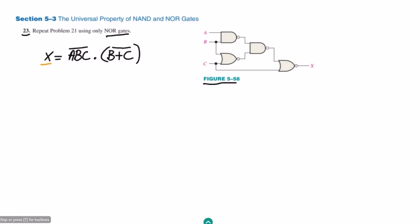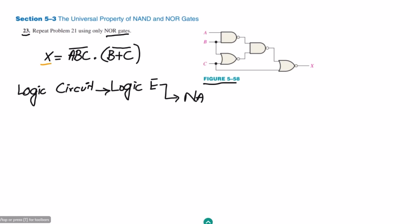So if we have a logic circuit, from this logic circuit we will have to find the logic expression, and from this logic expression we have to implement it using NOR gates. The same strategy we are going to follow.